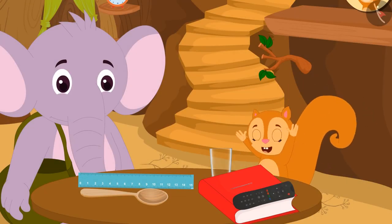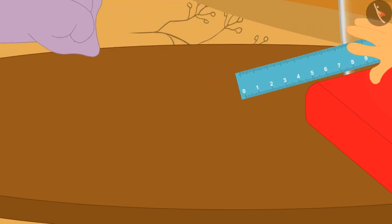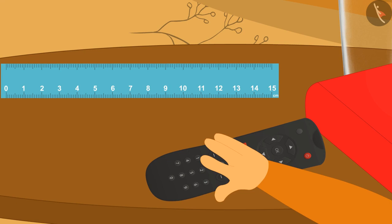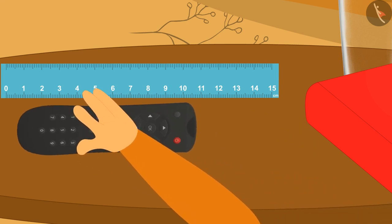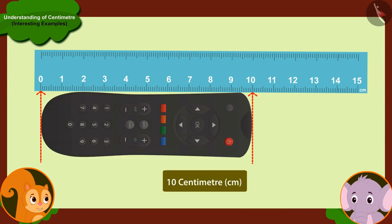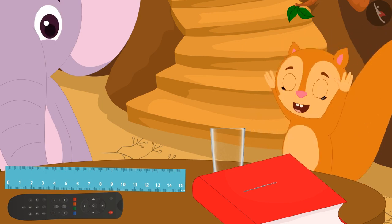Chanda got really excited about the ruler. She immediately took the ruler from Appu and placed her TV remote next to the ruler. Chanda told Appu, look, my TV remote is 10 centimeters long. I learned to measure the length of objects from the ruler. After saying this, Chanda started dancing happily.